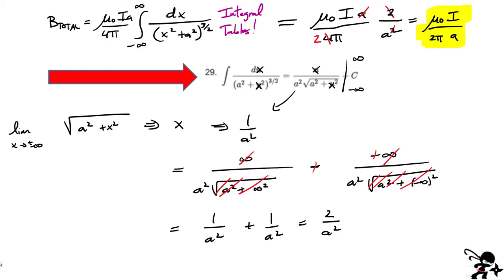That's it. Hopefully you learned how to apply the Biot-Savart law to calculate the magnetic field for at least a couple of cases. I have several other examples on my website — including a loop, a rectangular loop, and a Helmholtz coil. Thanks for watching.